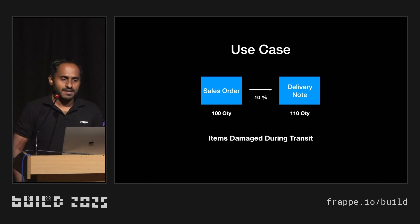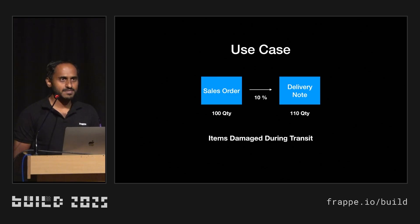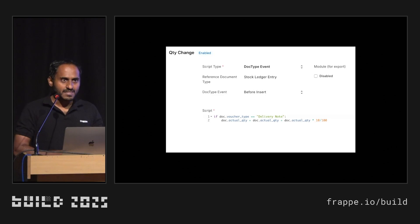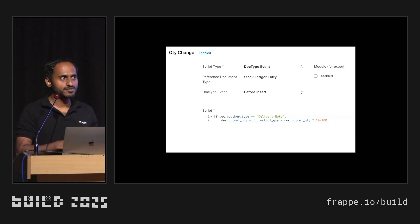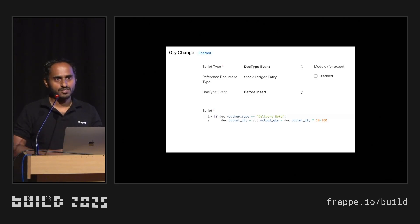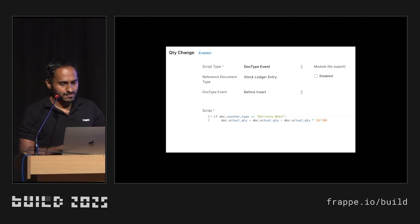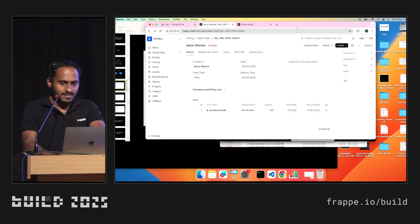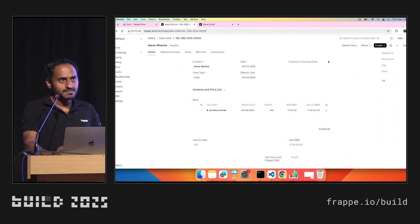The first use case: the customer wants an additional 10% quantity on a delivery note, because during transit some items might get damaged. To implement this, the developer wrote a server script on the stock ledger entry. Most of you are aware that we create the stock ledger entry on submission of stock transactions to maintain the stock ledgers. He used the stock ledger entry to implement this logic of additional 10% quantity. But because of that, the quantity at the transaction level and the quantity on the stock ledger do not match.